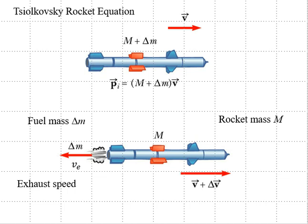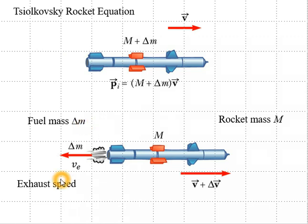In this module, we'll be looking at Tsiolkovsky's rocket equation that shows the increase in velocity of a rocket after you eject a fuel mass delta M. The fuel mass is delta M, the exhaust speed of the fuel is VE, and the rocket's going to increase its speed by delta V after it ejects the fuel mass.